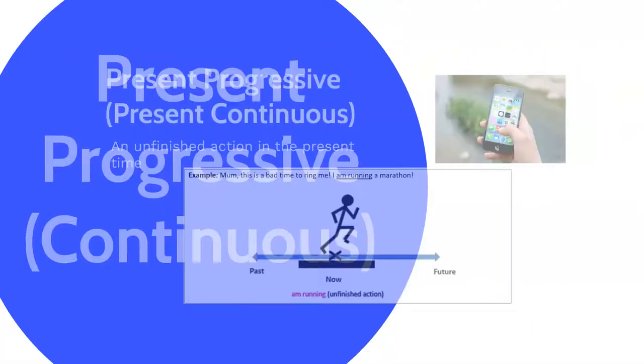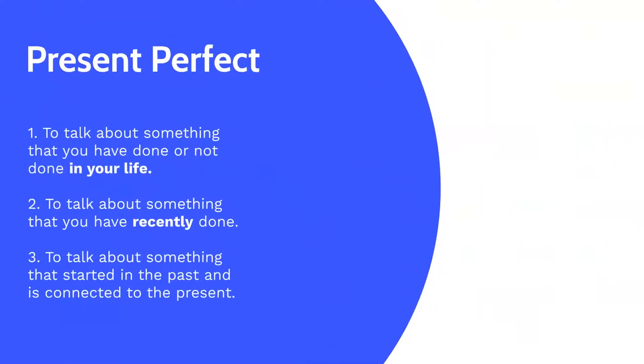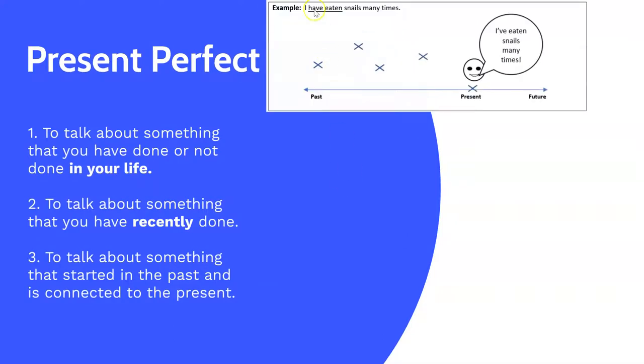Then we have the present perfect tense. Now this one's really interesting because it can be used in three different ways. The first is to talk about something that you've done or not done in your life. An example is, I've eaten snails many times. It's not important the exact times that this took place. The main idea is that you've done this in your life.